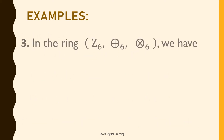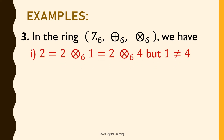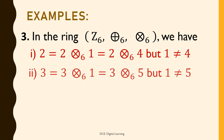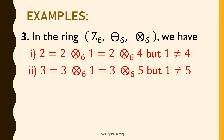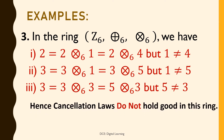Example 3: In the ring (Z₆, addition modulo 6, multiplication modulo 6), we have: 2 = 2·1 = 2·4 but 1 ≠ 4; and 3 = 3·1 = 3·5 but 1 ≠ 5; and 3 = 3·3 = 5·3 but 5 ≠ 3. Hence cancellation laws do not hold good in this ring.